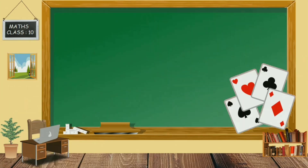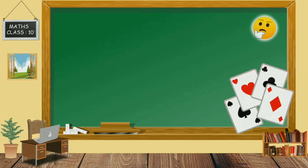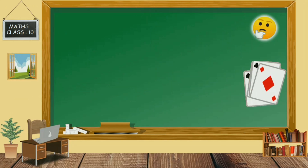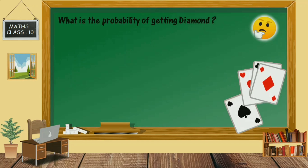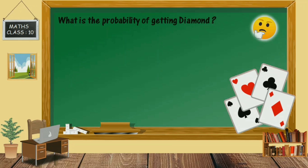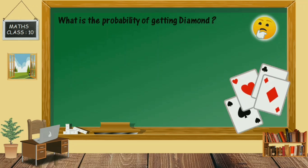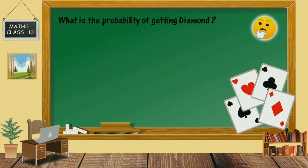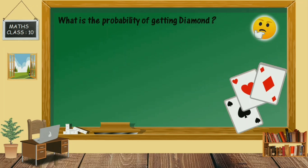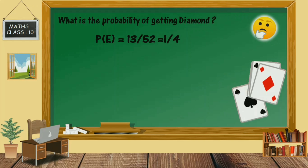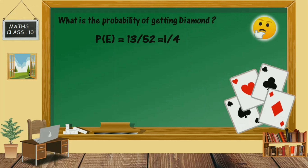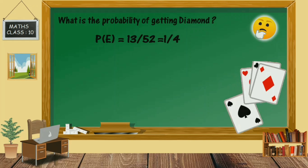Now let me shuffle this deck of cards so that the cards get randomly mixed up. What is the probability of getting a diamond from a well-shuffled deck of cards? Using the formula, probability of an event equals number of favorable outcomes by total number of outcomes. The total outcome is 52 and the number of favorable outcomes is 13, because the deck of cards contains 13 diamond cards. So the probability of getting a diamond is 13 by 52, which equals 1 by 4.